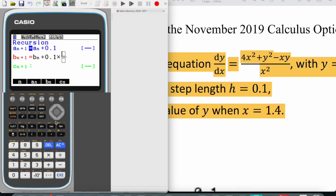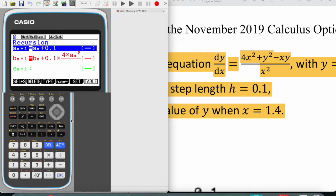Over here we're going to be inputting 4 multiplied by a n squared plus b n squared minus a n multiplied by b n divided by a n squared. This way we defined what the x's and y values are and how they behave.